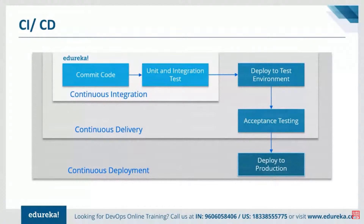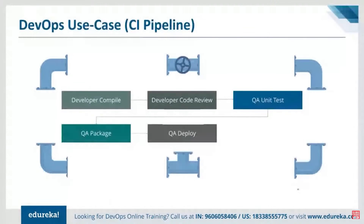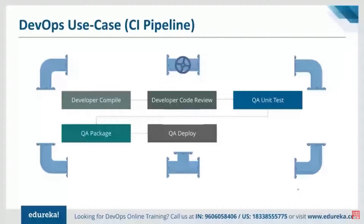For the practical session, we'll use Jenkins to prepare a build pipeline that compiles the code, reviews it, performs unit testing, packages it, and deploys it manually. We're using a Java address book application with test cases already written in a GitHub repository. Maven is the build tool, and Jenkins has already been installed on an Ubuntu machine and configured at port 8080.